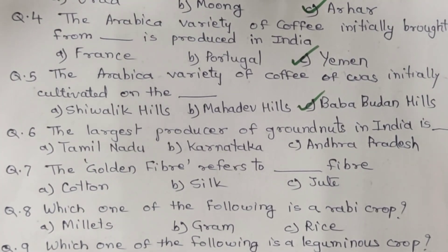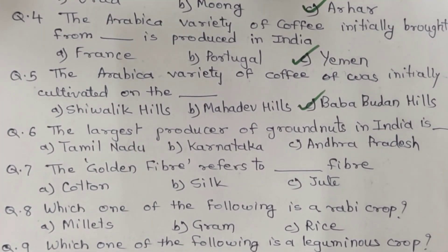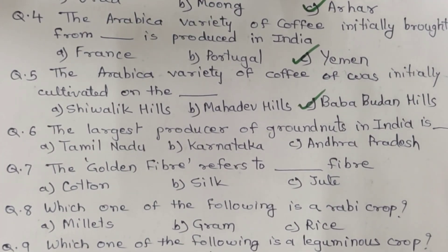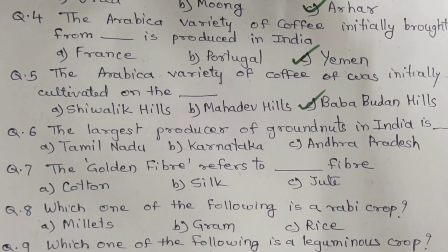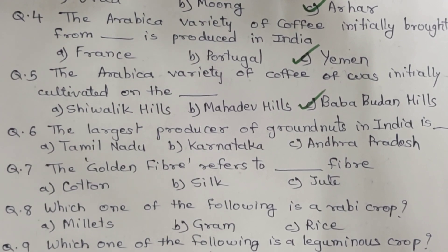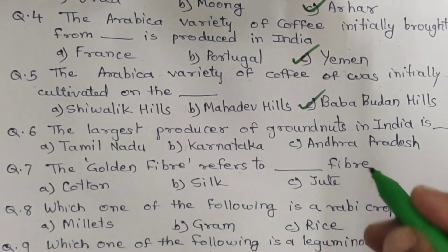Question 6. The largest producer of groundnut in India is which state? A. Tamil Nadu. B. Karnataka. C. Andhra Pradesh. And the correct answer is C. Andhra Pradesh.